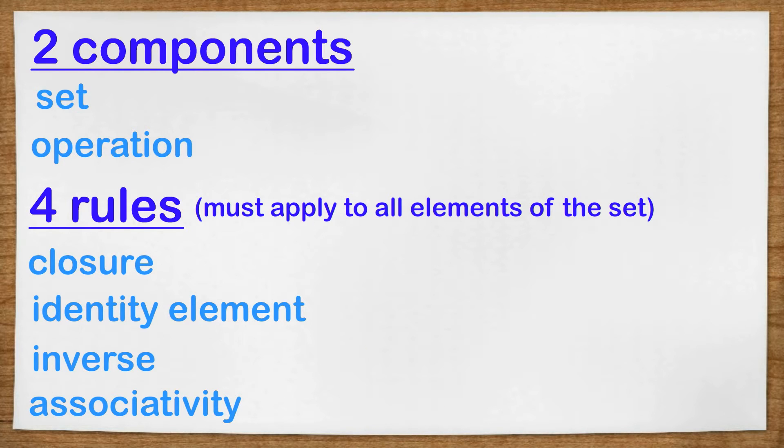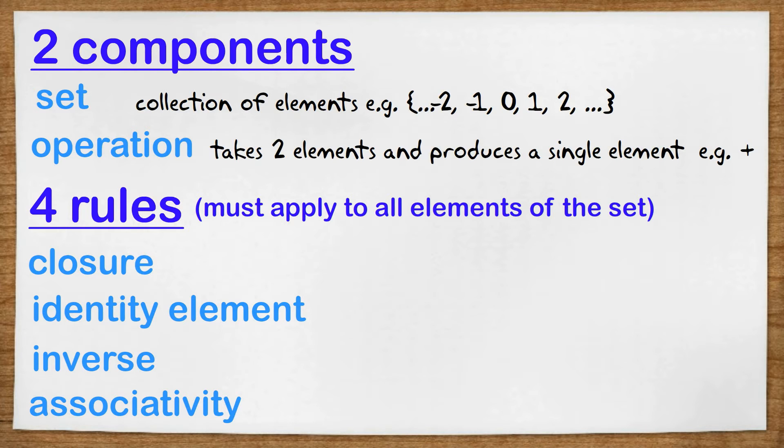We need two components and four rules to be obeyed. The two components are that we need a set, which is just a collection of elements, and we need an operation. An operation is something like addition or multiplication, something that takes two elements and produces a single element. So we might have a group that's the integers, that's the set, and the operation will be addition.